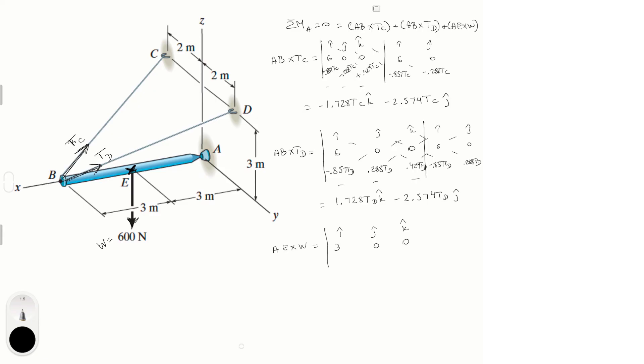The last matrix is AE × W, which is easiest because it has many zeros. From A to E is (3, 0, 0) — note it's 3, not 6 — and the weight vector is -600k. With all the zero diagonals, only the last negative diagonal contributes: (-1)(-600)(3) = +1800 in j. So AE × W = 1800j.